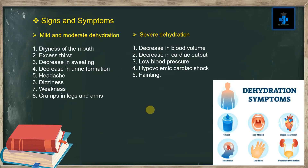Signs and symptoms: The signs and symptoms for mild and moderate dehydration are dryness of the mouth, excess thirst, decrease in sweating, decrease in urine formation, headache, dizziness, weakness, and cramps in legs and arms. In case of severe dehydration, the signs and symptoms are decrease in blood volume and decrease in cardiac output.